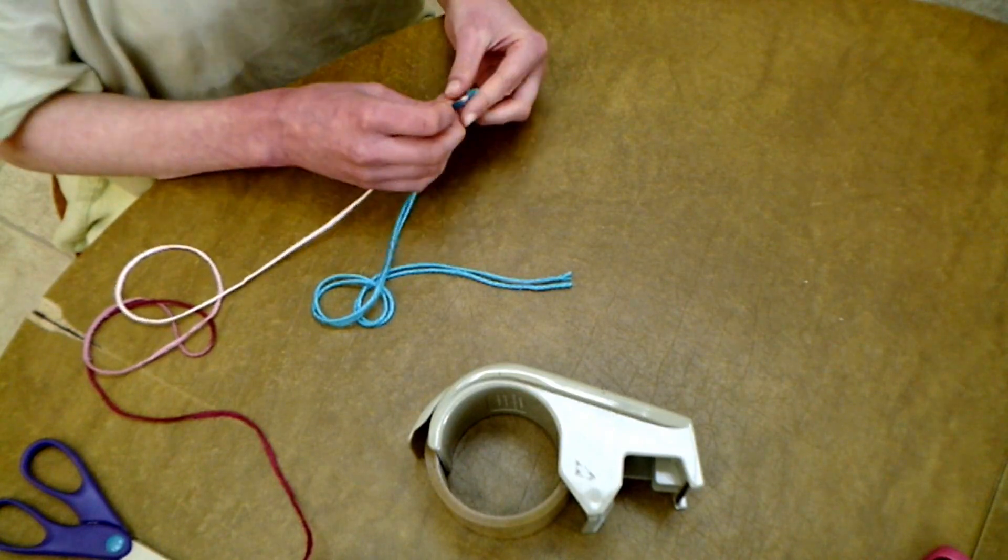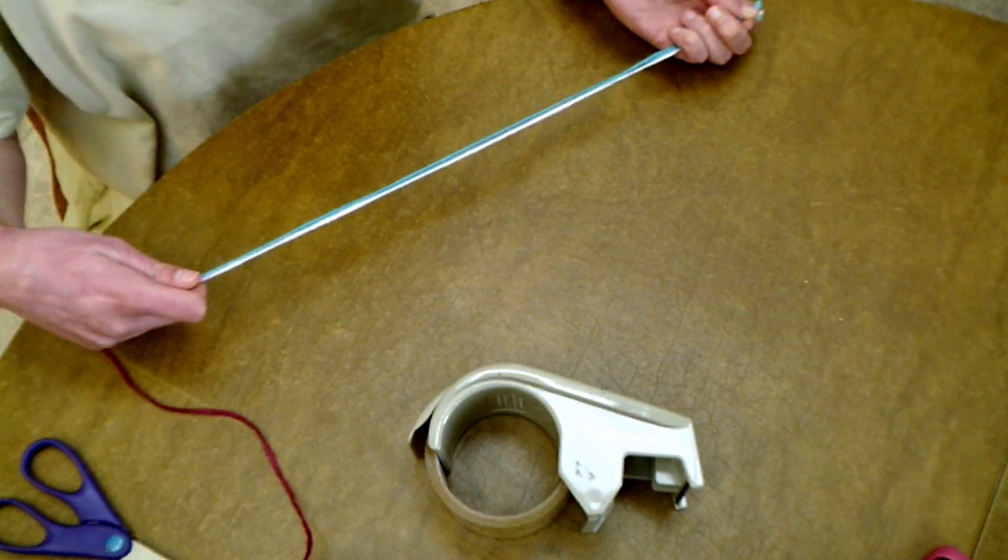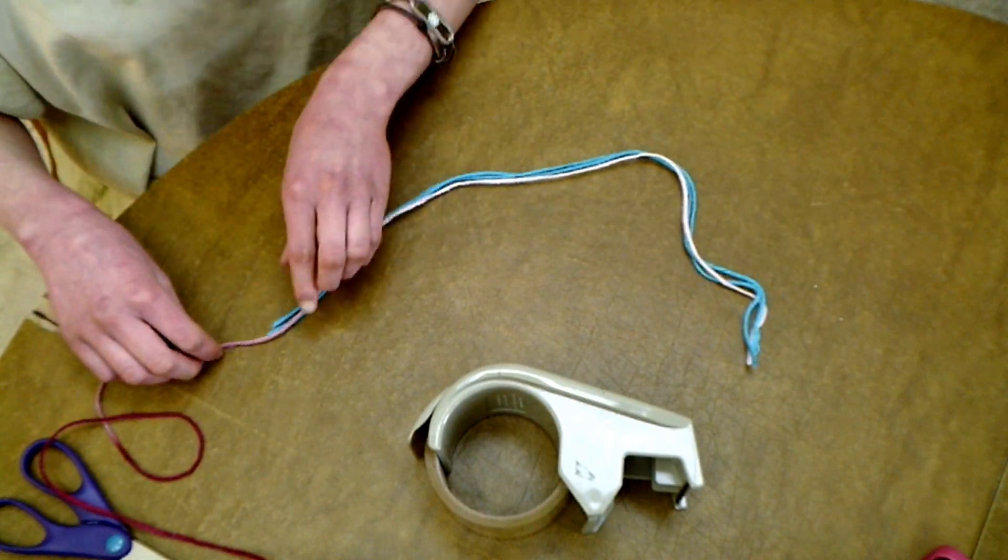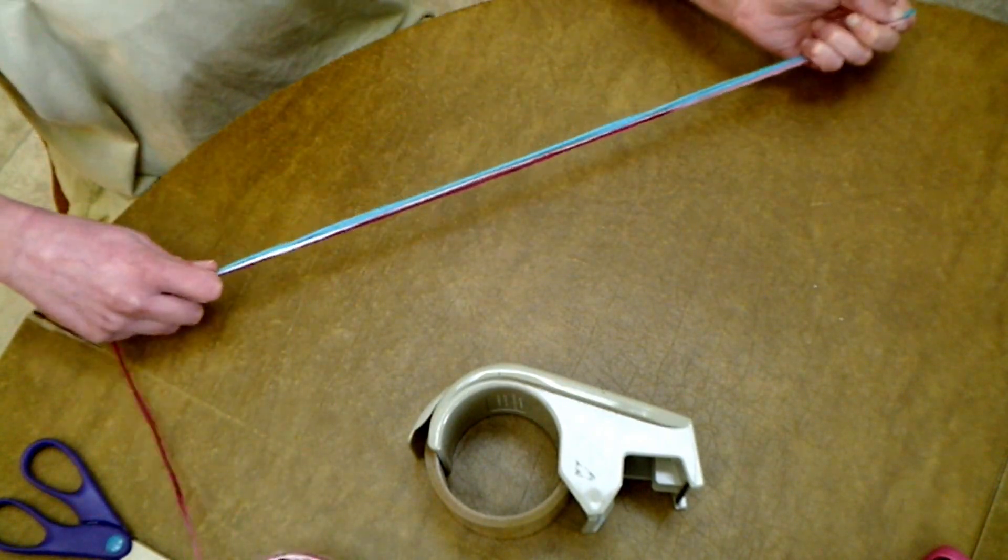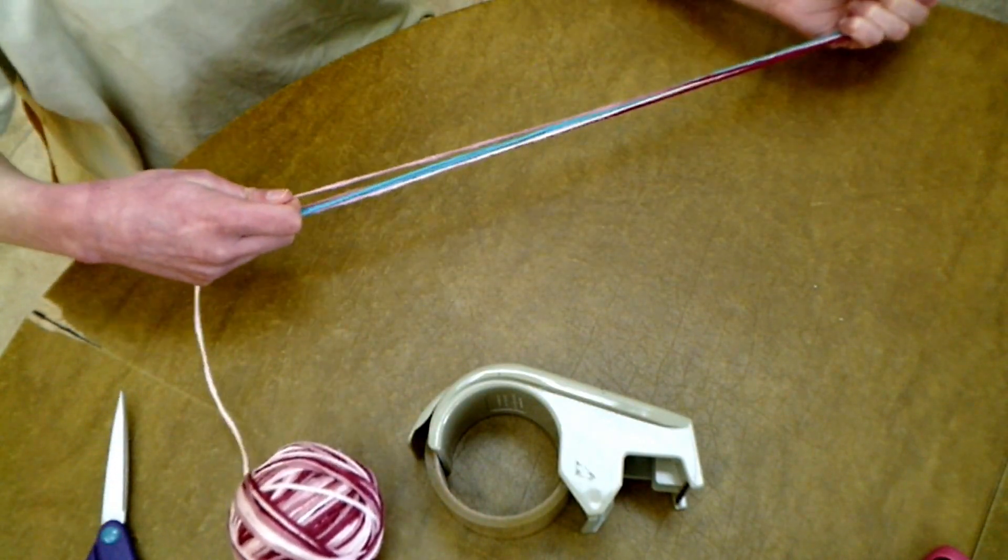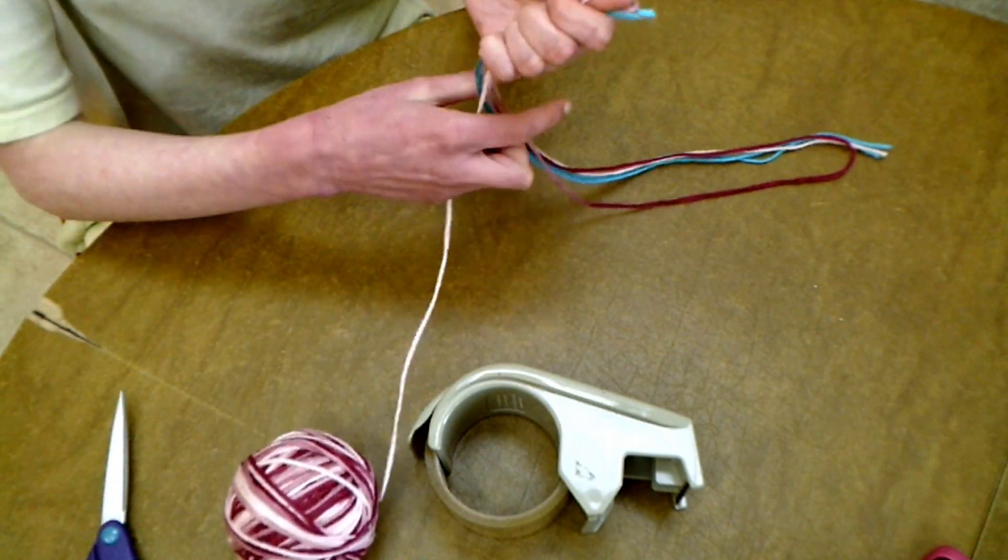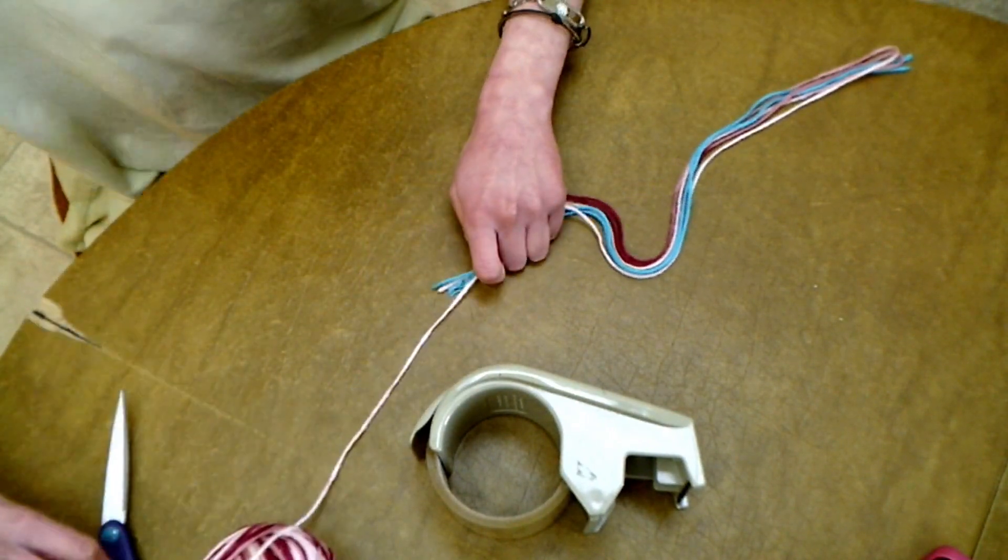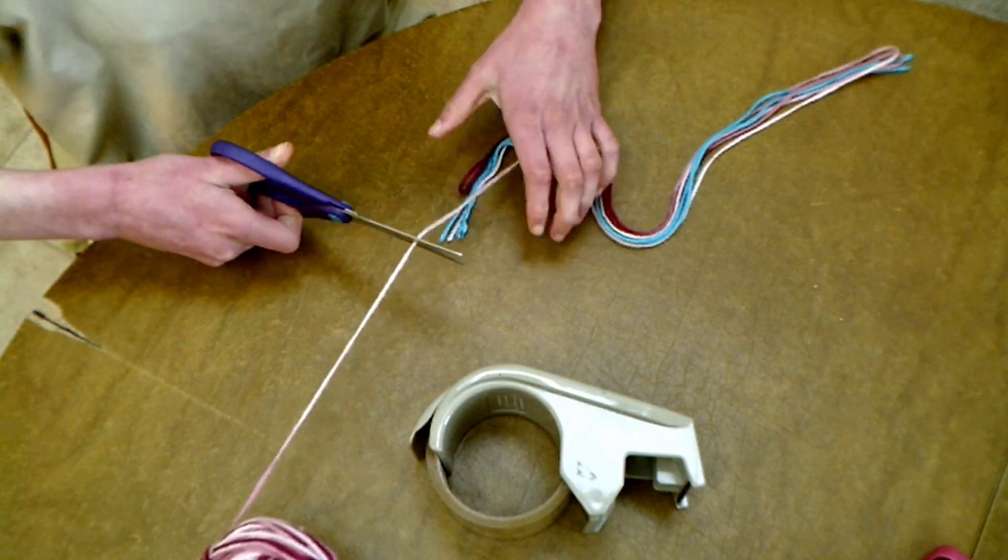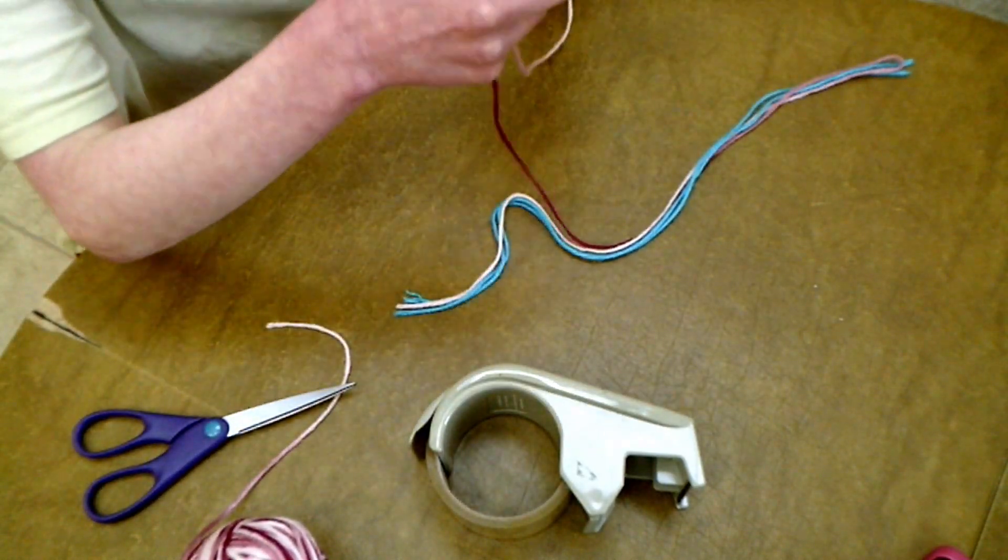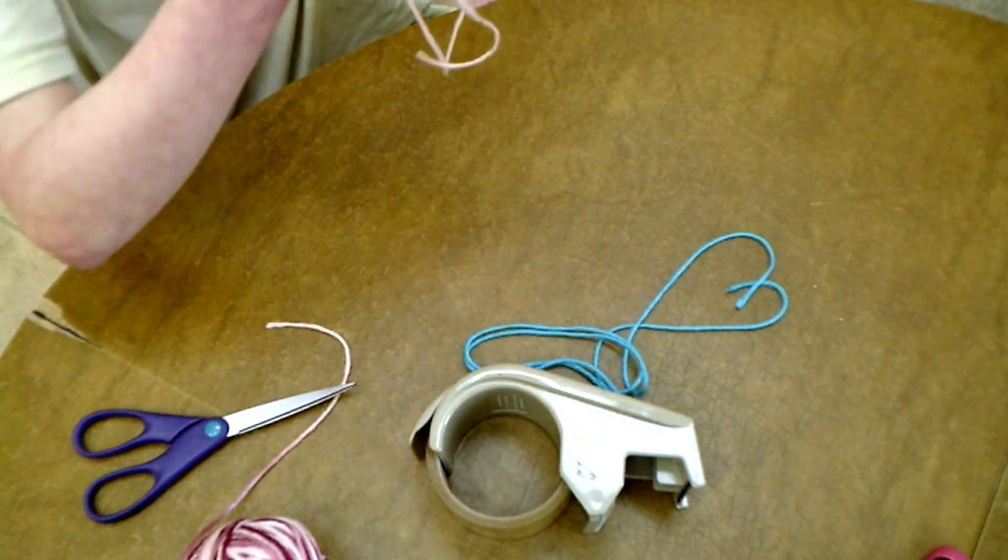So we want to make this one pretty long. Now, I quadruple the length of it, the blue yarn. So we go once, twice, three times, and four times. And then I cut it right there. It's always better to have it a little too long than too short.